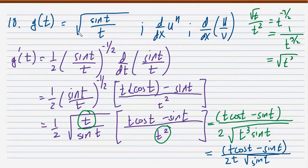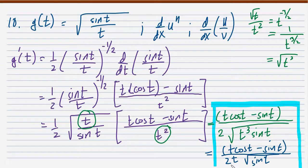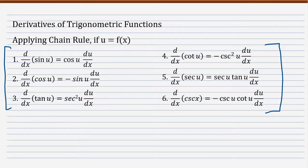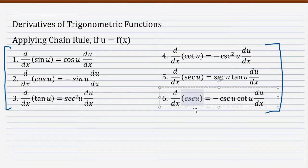So the final answer is (t cosine t minus sine t) over (2t times square root of t times sine t). That's it for this problem set on trigonometric functions. What you want to do is memorize the six basic trigonometric derivative formulas. One correction: that should be secant u and cosecant u. Thank you for watching, and I hope you learned something about the derivative of trigonometric functions.